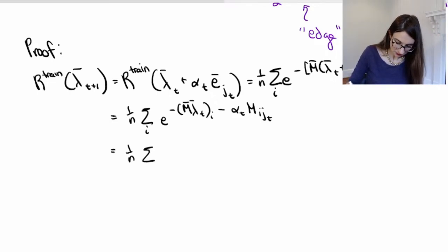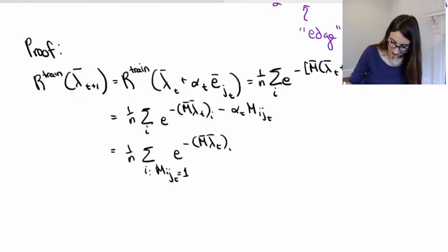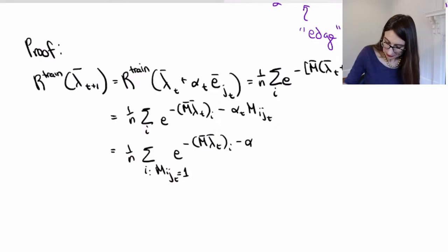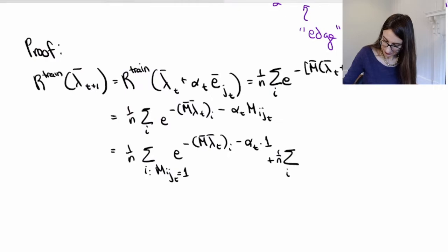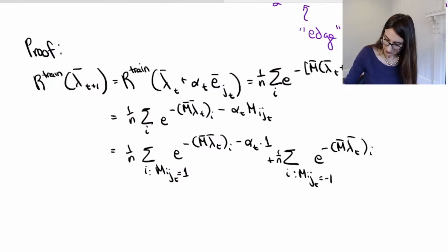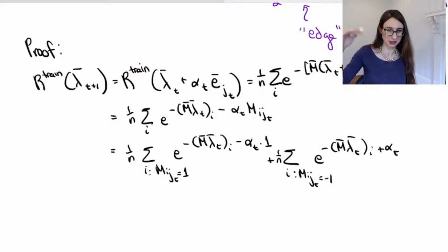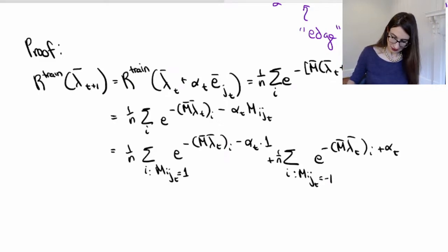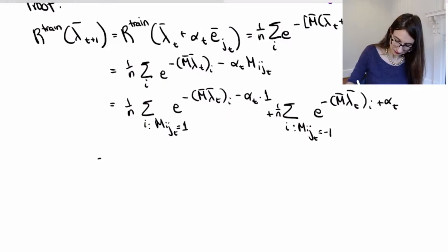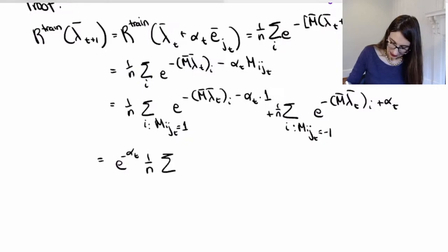So (1/n) Σ_{i: m_{i,j_t}=1} e^{-m_{λ_t,i} - α_t} plus the other term where m_{i,j_t} = -1, giving e^{+α_t} because it's minus α_t times −1. Then I'm going to pull out e^{-α_t} from the first term and e^{+α_t} from the other term.